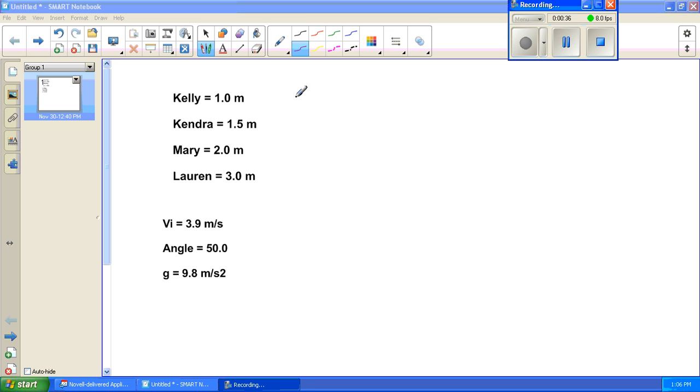So for this equation, we'll be using the range equation. The range equation. And the velocity stated in the problem is 3.9, the angle is 50, and the gravity is 9.8 meters per second squared.